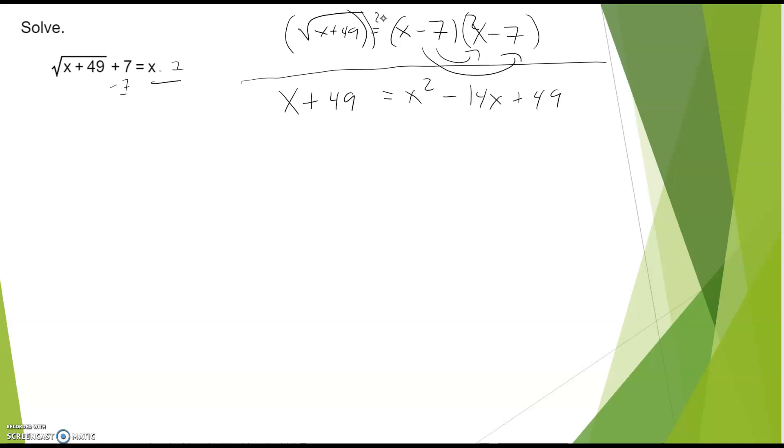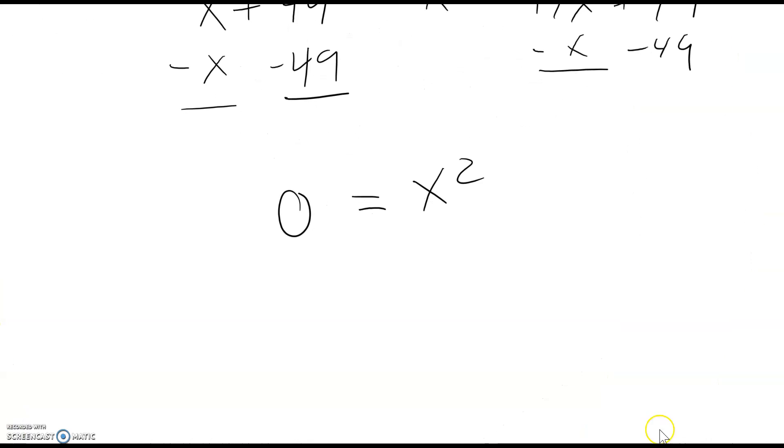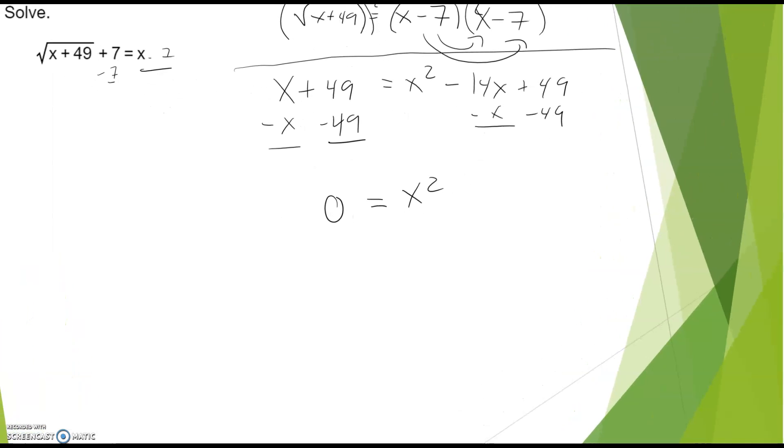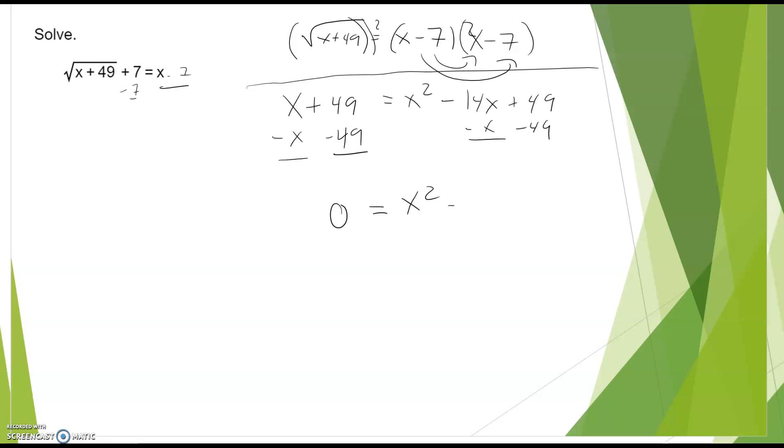This happens all the time, and this is why I spent so much time on quadratics. You'll end up, when you have different types of equations, you'll end up with quadratics a lot of the time. And that's what I have here, so I'm going to subtract x from both sides and subtract 49 from both sides. That gives me a 0 on the left, which is good. And what is that, minus 15x. And then, well, that's good for us. 49 minus 49 is 0. So we spent all that time on quadratics. How do I solve this?